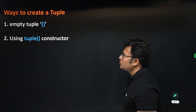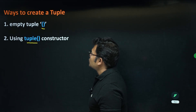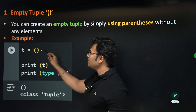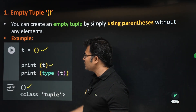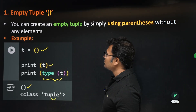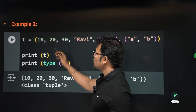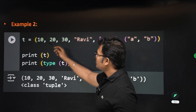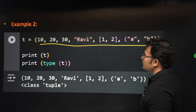There are two ways to create a tuple: using parentheses or using the tuple constructor. Using parentheses directly, for example t = () creates an empty tuple, and type(t) shows it is a tuple. You can also give elements inside the parentheses, and all of them will be taken as elements of the tuple.